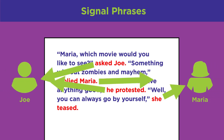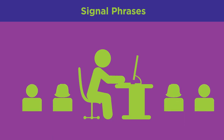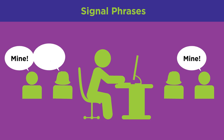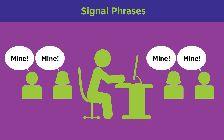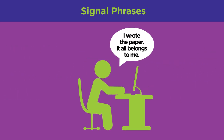The phrases 'asked Joe,' 'replied Maria,' 'he protested,' and 'she teased' are signals that tell a reader who is saying what. When writing a research paper, a similar method is used — it's important that a reader can understand to whom an idea belongs.